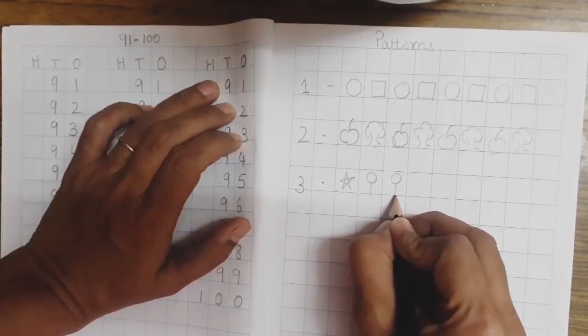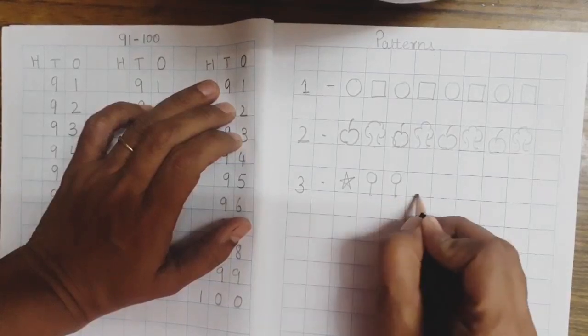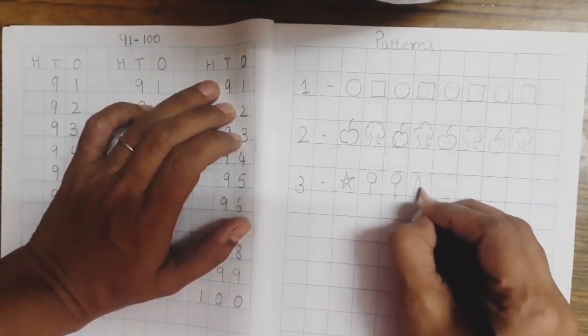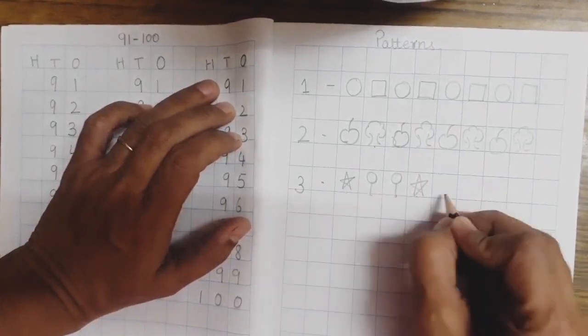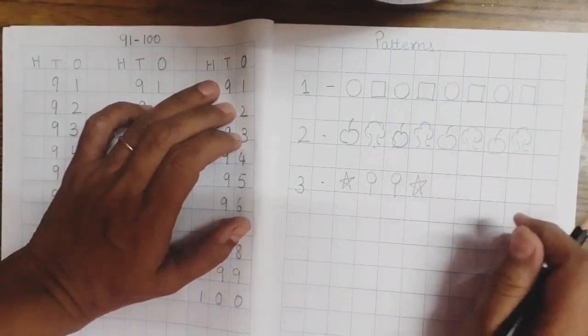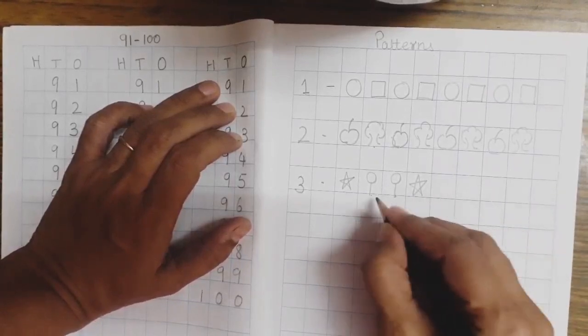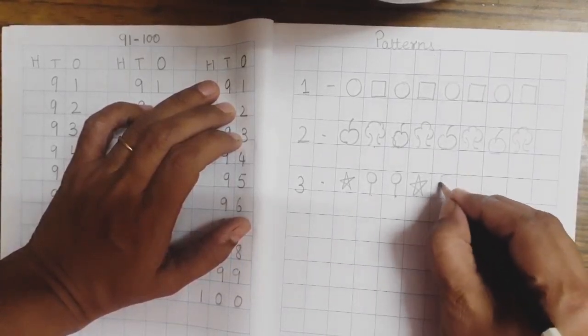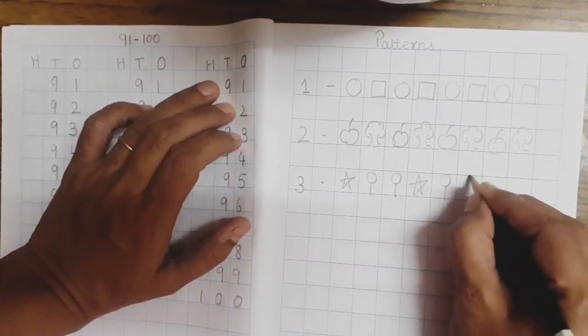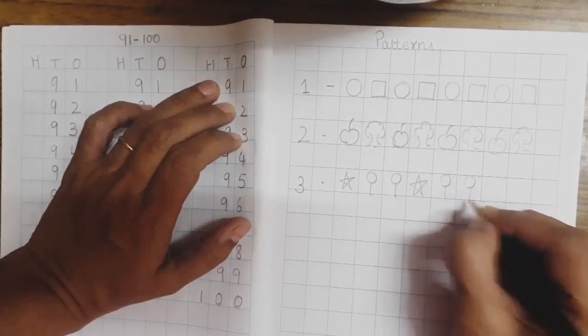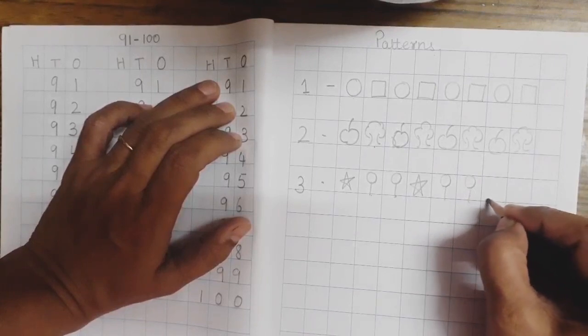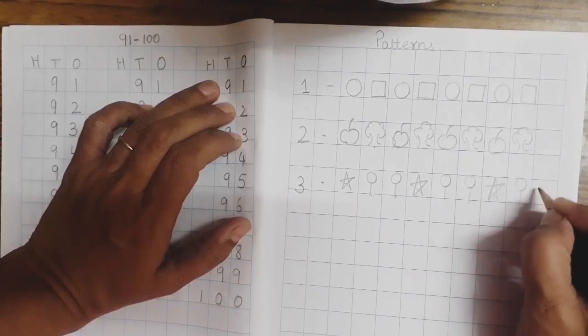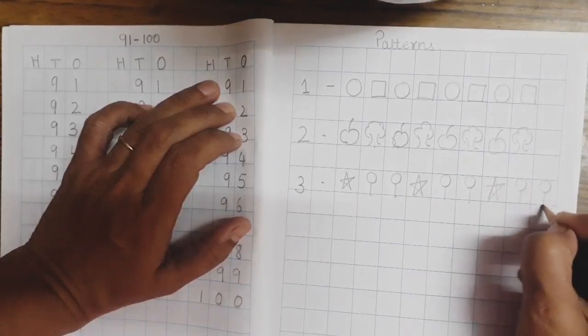Now, tell me children, after lollipop, what should come? Star again. Yes. Now, I have drawn 1 star. Can I draw another star? I like to draw a star. Can I draw? No. So, I have to draw 2 lollipops. 1 and 2. This way. Now, children, after lollipop, again what I have to draw? Star. And then, again I am going to draw 2 lollipops.